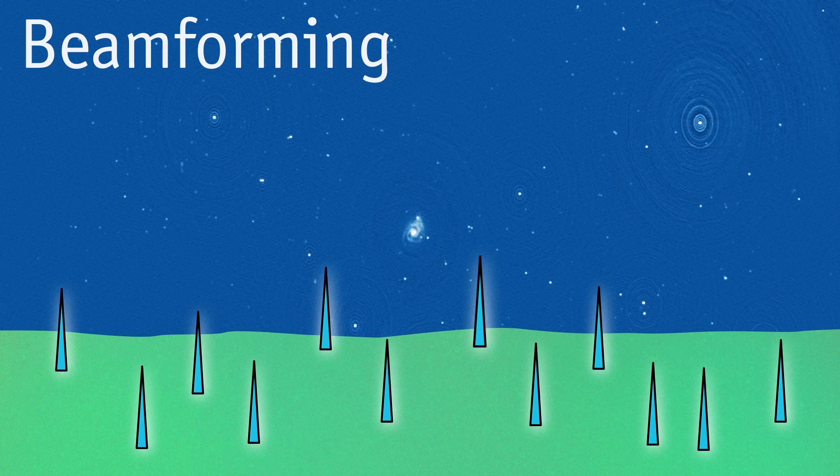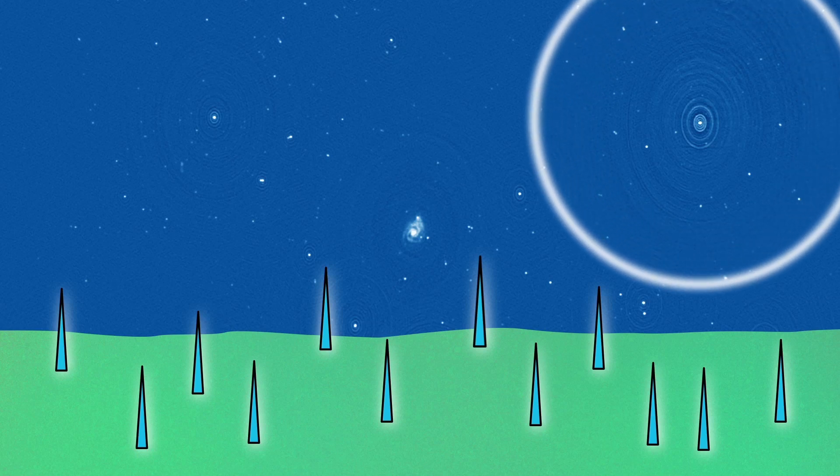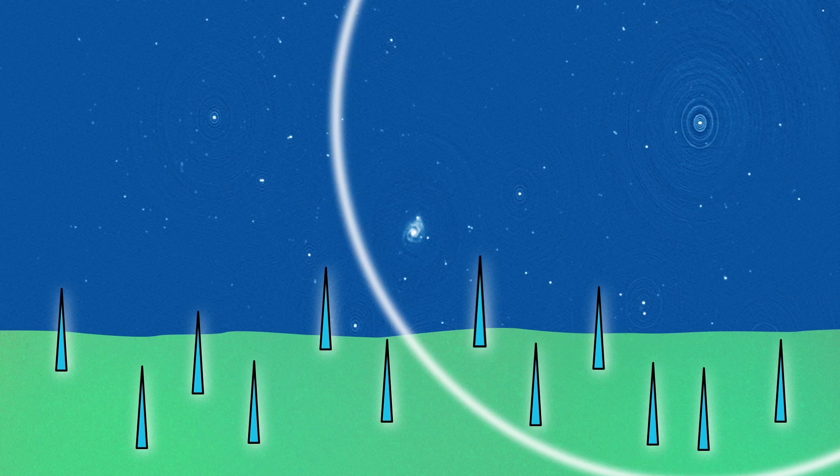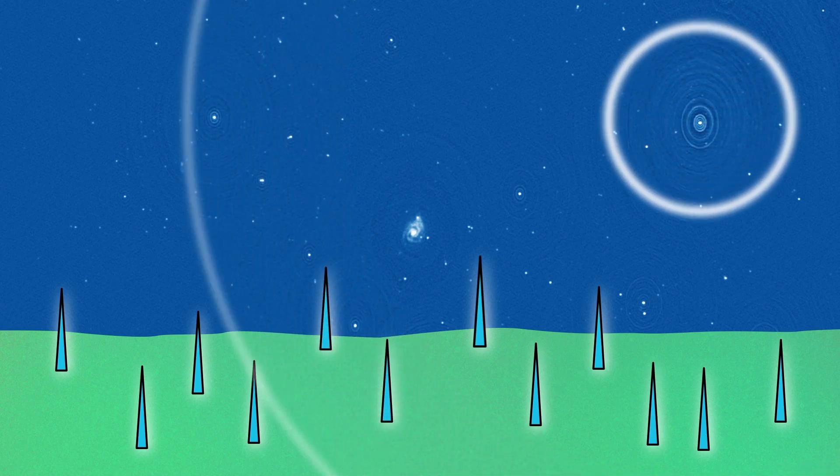Suppose a galaxy sends out radio waves. After years of traveling through space, they arrive on Earth and hit our antennas. They arrive at this antenna a fraction of a second earlier than at this antenna. So to map only these waves...